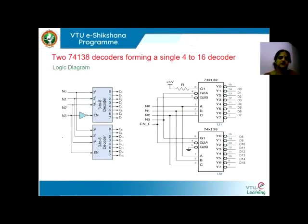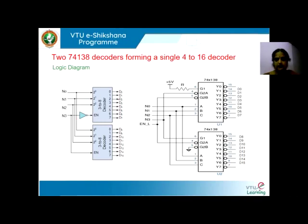This particular pin can be used as a control pin. When the MSB is low, the first 74LS138 will be enabled and will give outputs from D0 to D7. On the other hand, when the MSB is high, the second IC will be enabled and will be able to generate outputs from D8 to D15.